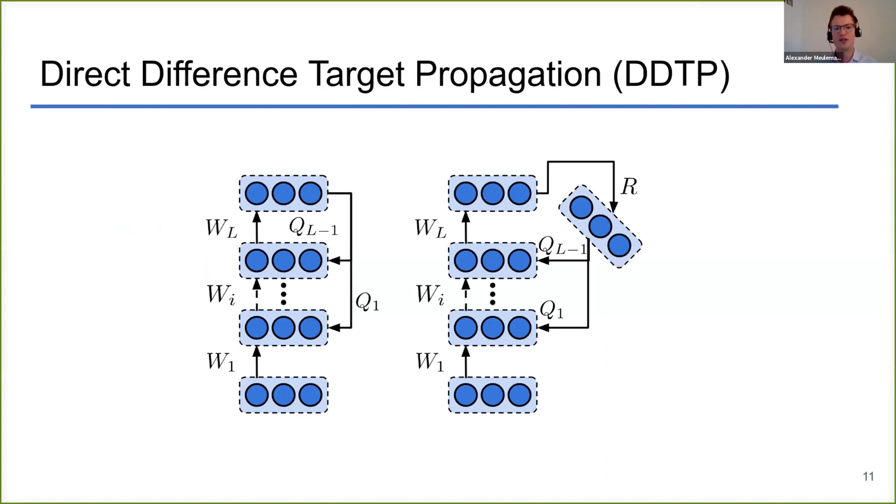Now quite interestingly, this new reconstruction loss also provides a principled way to train direct feedback connections from the output to the hidden layer. These can be simple linear mappings, but you can also go more exotic. For example, you can use a shared hidden feedback layer from which then direct feedback connections to all the layers are drawn.